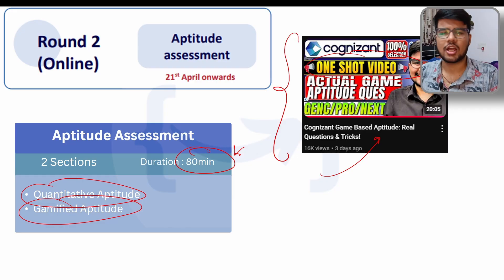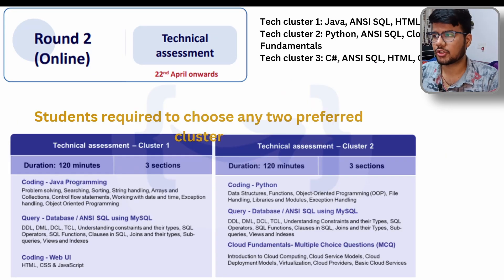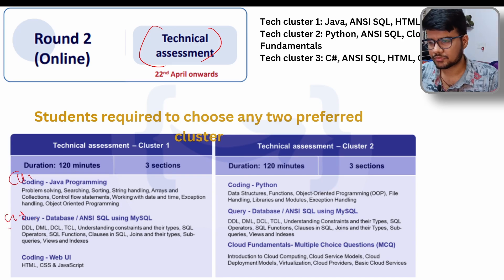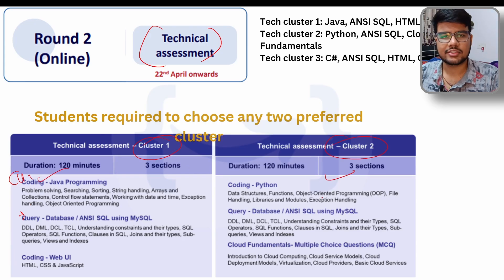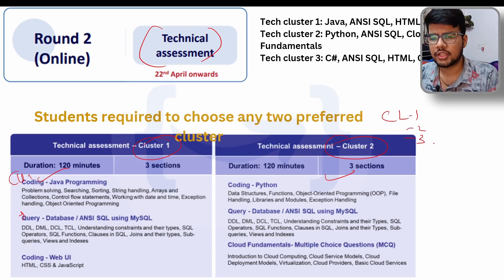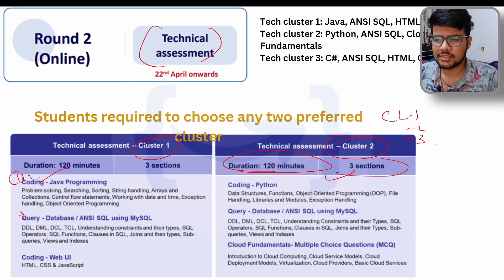Round two is the technical assessment. Cluster 1 is Java, Cluster 2 is Python, and Cluster 3 is C#. Now I hope you understand what CL1, CL2, and CL3 mean. The technical assessment duration is 120 minutes with three sections, and the topics covered are also important for your interview.